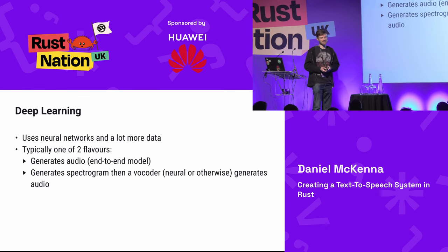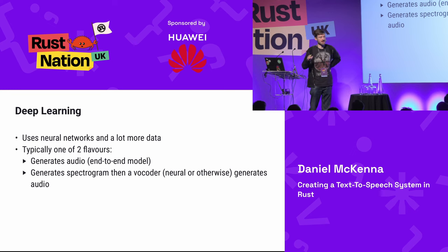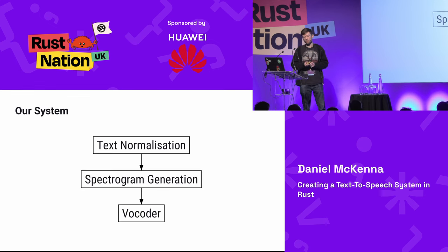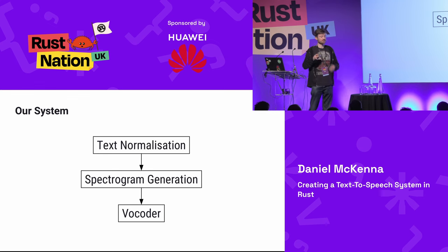And then there's deep learning — neural networks. These tend to come in two flavors: you either put text straight in and audio comes straight out, or you generate a spectrogram and then have a vocoder which turns the spectrogram into audio. Our system is going to use the spectrogram-vocoder approach, with text normalization, spectrogram generation, and vocoding — and these are essentially the sections of this talk.